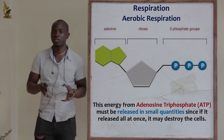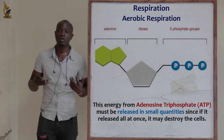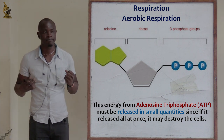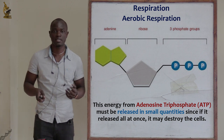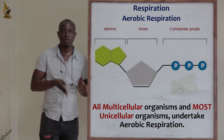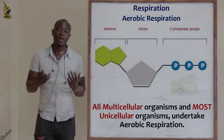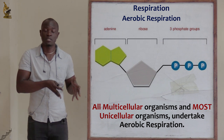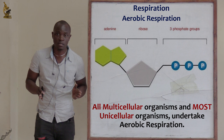If energy is released in large quantities — all 38 or so molecules at once — the cells are going to be destroyed by excess heat or by the release of too much energy. So we see that all multicellular organisms and most unicellular organisms, such as some bacteria and pathogens, respire aerobically.